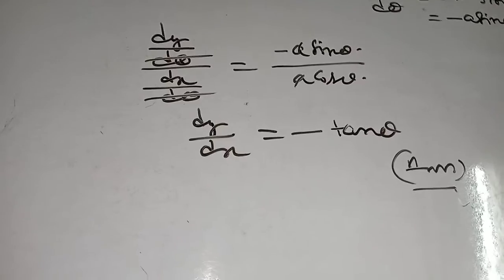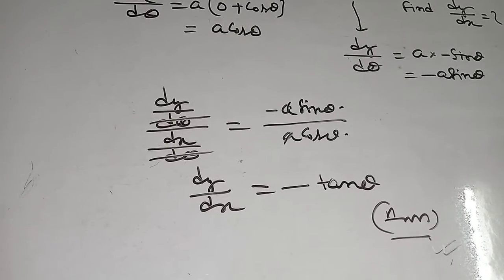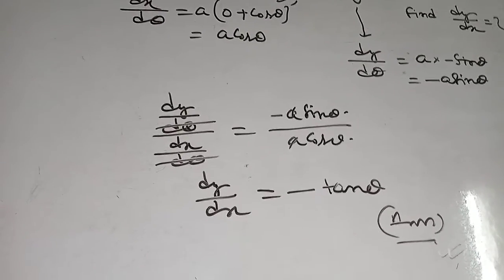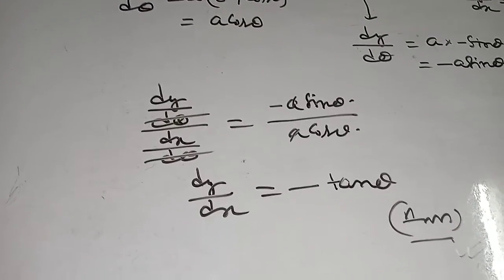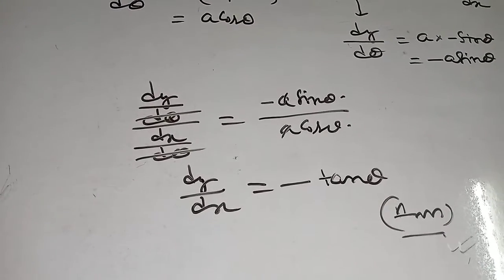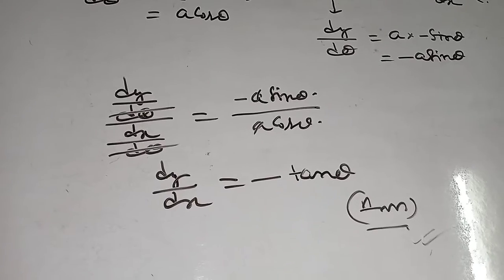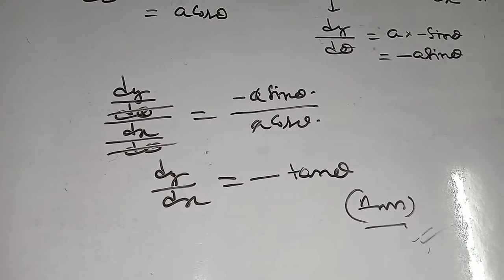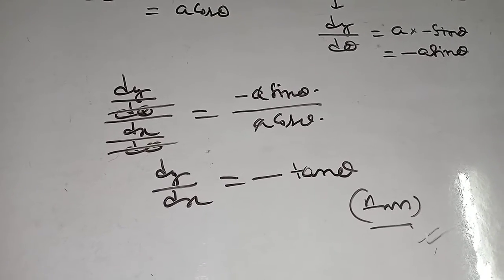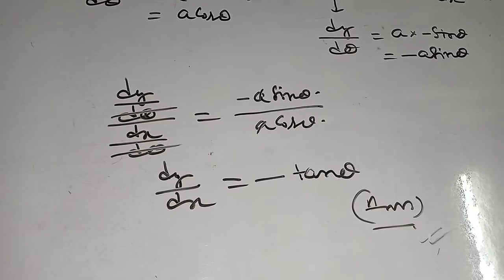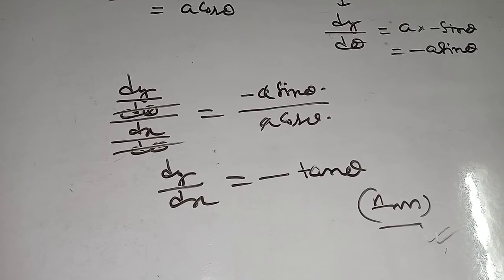Here, remember: d dx of any constant is 0, and d dx of sin theta means cos theta, and d dx of cos theta means minus sin theta. After applying these rules, you will find the result.